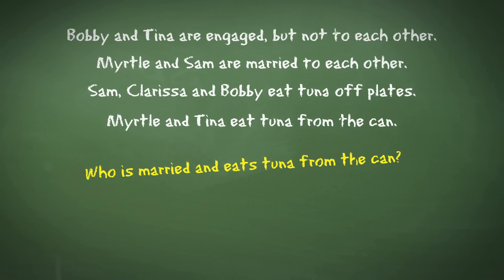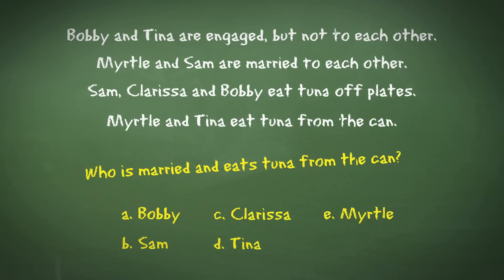Our answer choices are Bobby, Sam, Clarissa, Tina, or Myrtle. Let's work through each of the answers in turn and see which one is correct. We are looking for the person who is both married and also eats tuna from the can, so we need to check which of the answer choices meets both those requirements and not just one of them.